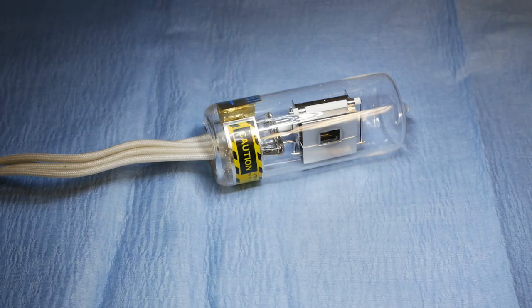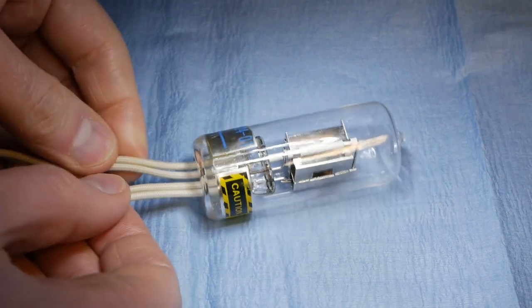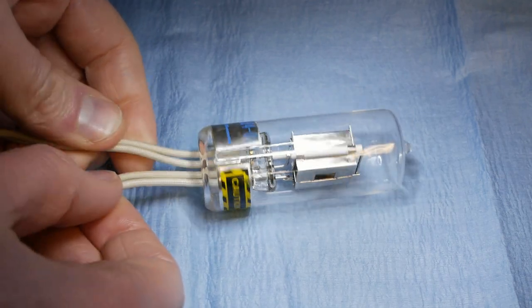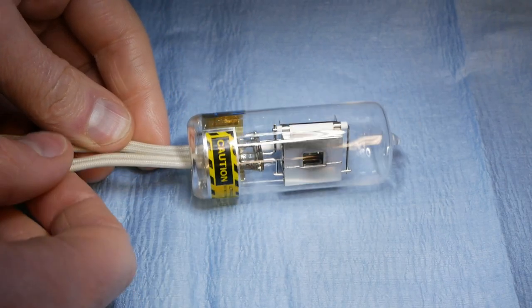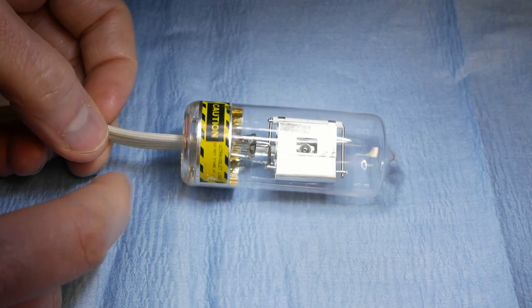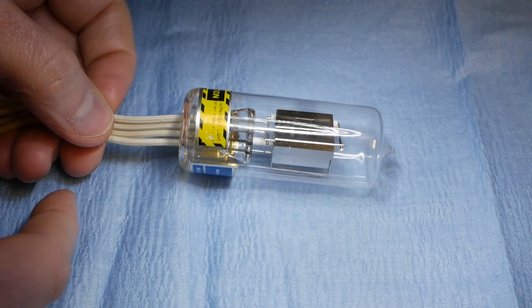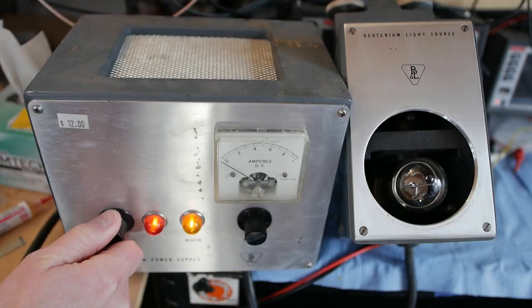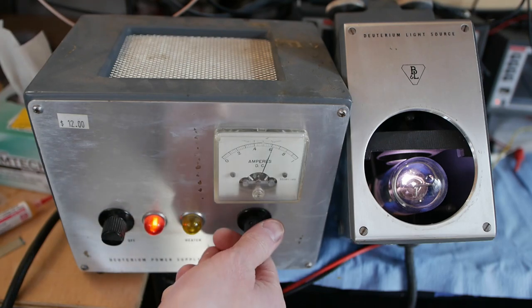The deuterium lamp itself is actually built fairly similarly to an ordinary fluorescent tube. It has four leads just like having two pins on either side of a fluorescent tube, and it has a heater for two of the leads to make it easier to start the arc. It's a low pressure discharge lamp. When you turn the power supply on it warms up for about five or ten seconds and then when the power supply detects that the arc has struck it turns the heater off, very similar to a standard old-fashioned fluorescent ballast.